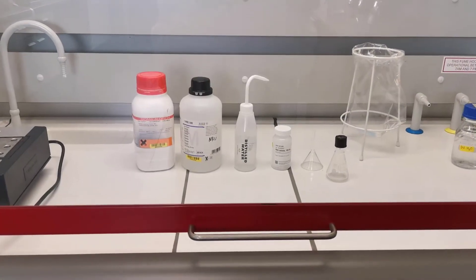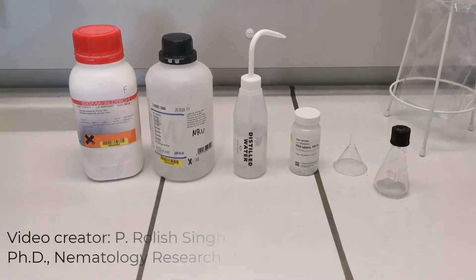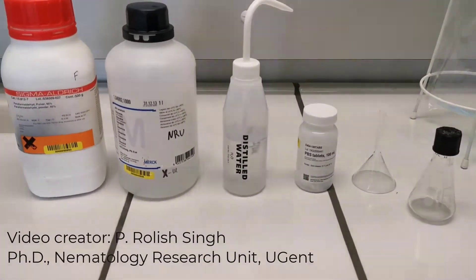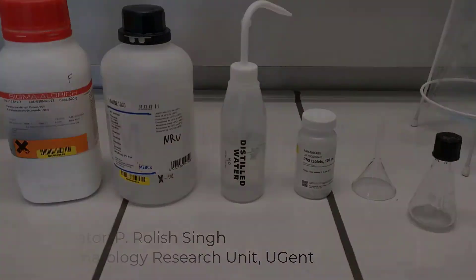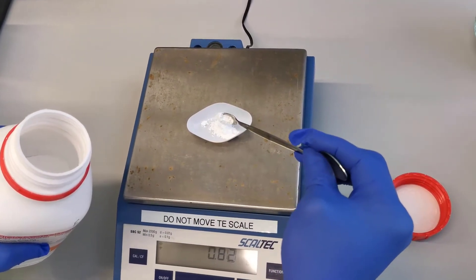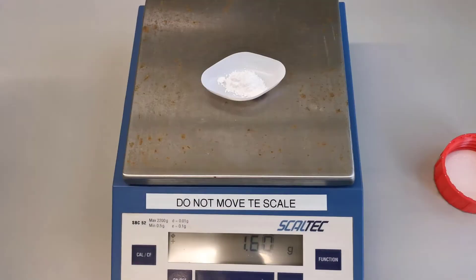As the main ingredient paraformaldehyde or PFA is a toxic chemical which can cause health hazards, working under a fume hood is highly recommended. Depending on the amount of the fixative you want to prepare, you can calculate the amounts of all the requirements.